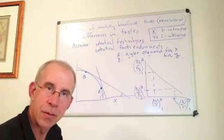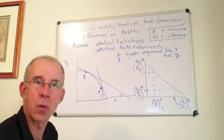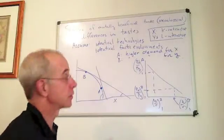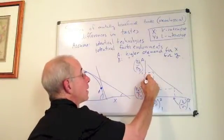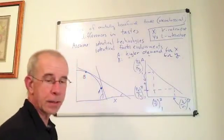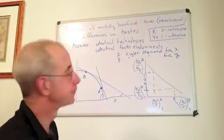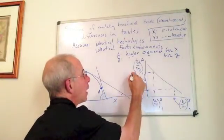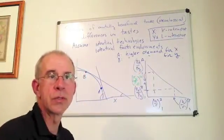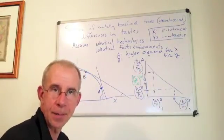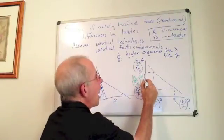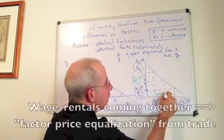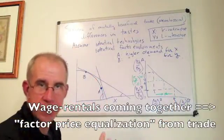And as they trade with each other, the relative prices are going to tend to come together. In fact, they will come together if you have no trade restrictions of any type. So they come to some point in the middle, some common trade price that they both now use in making economic decisions.